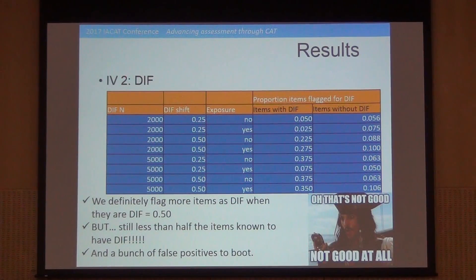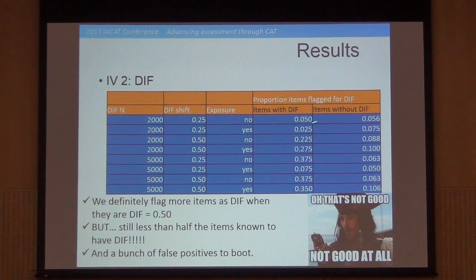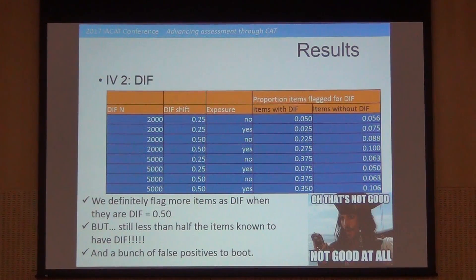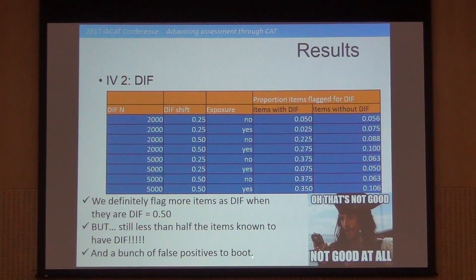What I found here is that for the items that actually had DIF, the proportions detected were higher than for items without DIF. So there were clearly more DIF items flagged among those that were actually created to have bias, compared to those created without bias. But the disturbing thing was that there were a number of false positives — items flagged as having bias when they actually did not.